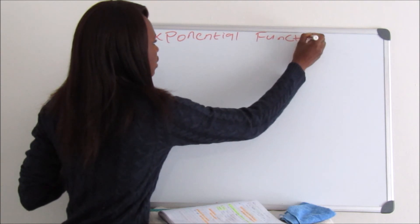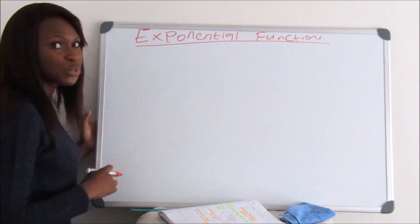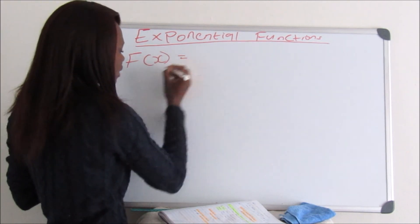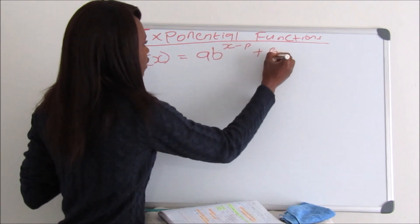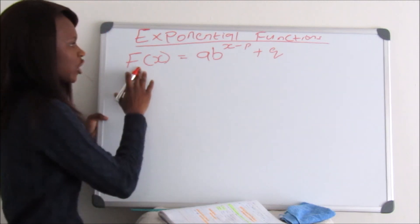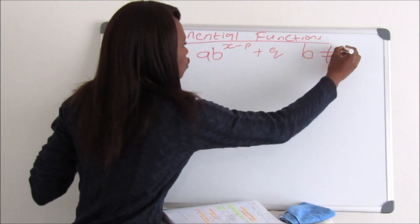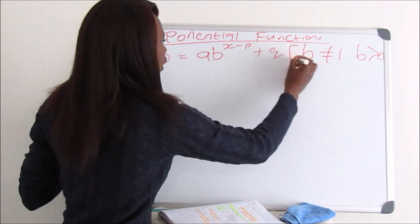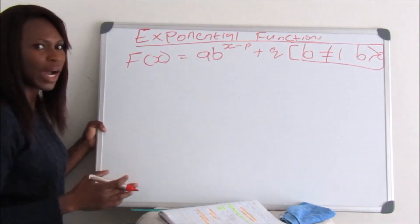With exponential functions, we have a standard equation of f(x) equals AB to the exponent of x minus P plus Q. This equation has two conditions: B should never be equal to 1, and B should always be greater than 0.